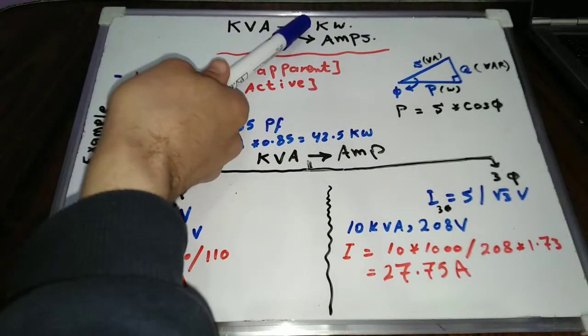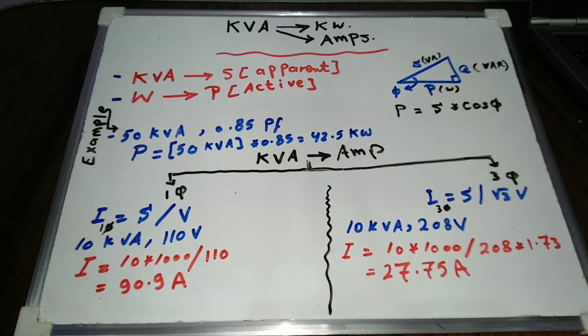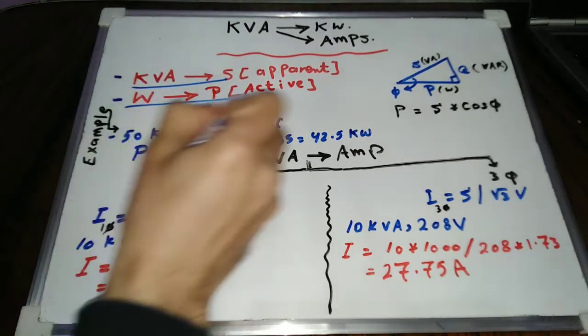How to convert kV ampere to kW and to amps? Volt ampere is the unit of apparent power, while watt is the unit of the active power.